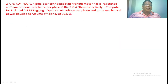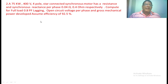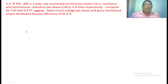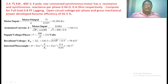Now take the second numerical. A 75 kilowatt, 400 volts, 4-pole star-connected synchronous motor has a resistance and reactance per phase of 0.04 ohm and 0.4 ohm respectively. Compute for full load at 0.8 power factor lagging: the open circuit voltage per phase and gross mechanical power developed, assuming efficiency of 92.5%. Since the power rating given is output power, input power equals output power divided by efficiency, giving 81.081 kilowatts.